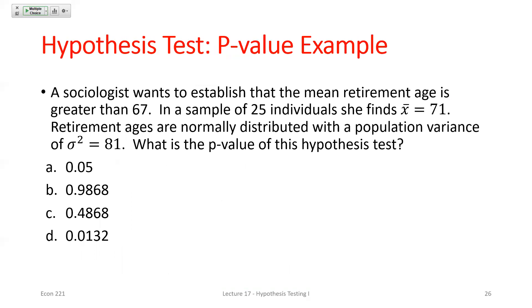Now a new example: a sociologist wants to test whether the mean retirement age is greater than 67. If we want to test for greater than 67, that's our alternative hypothesis. We stack the deck against ourselves and assume the opposite as the null: the mean is less than or equal to 67. Whatever you want to find is the alternative; you then assume the opposite for the null.